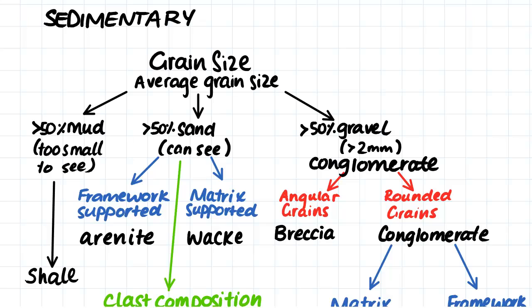The largest type being gravel, where the grain is larger than 2mm in diameter. If more than 50% of the rock is made up of these gravel sized grains, then we would call it a conglomerate.